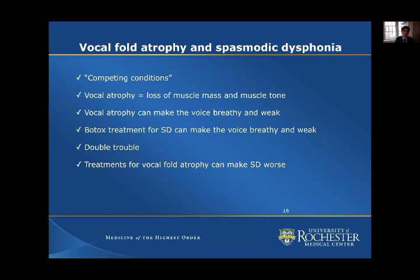We still need to learn more about vocal atrophy. Patients who have it already have a vocal cord closure issue because the muscles are skinny — when the vocal cords come together, they don't close as well. One of the ways we treat spasmodic dysphonia is with Botox, which weakens the muscles.